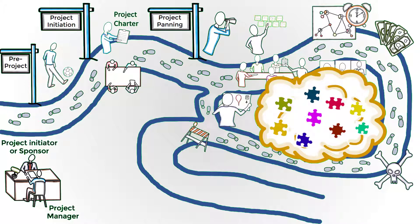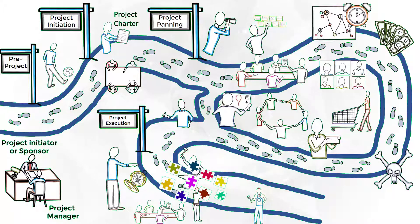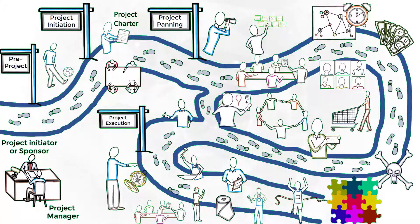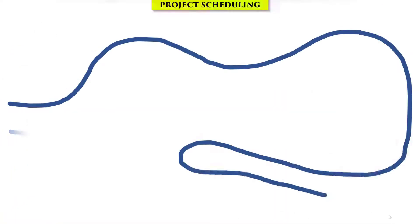For each task, durations, resources, cost, sequence, and risks are defined. Once the project planning is approved, the project execution starts. The project team works on each task according to the schedule. In the end, the project product is delivered — and hopefully according to the client's initial idea.